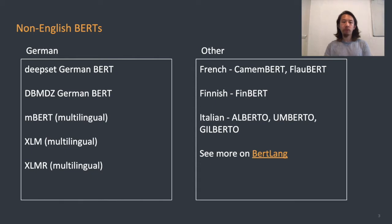All this fits into a line of work that looks to create language models for languages other than English. For example, in French there exists the Camembert model and the Flaubert model; in Finnish there's FinBERT; in Italian there's Alberto, Umberto, and Gilberto. You can see a much more comprehensive list on the BERT Lang website.